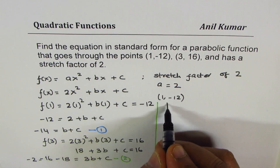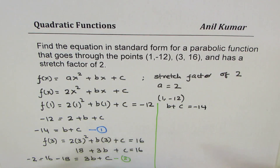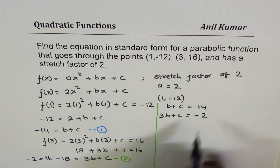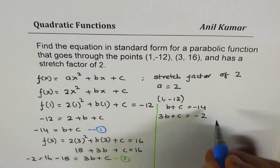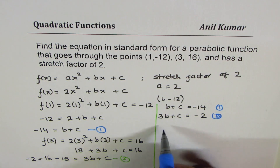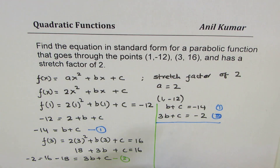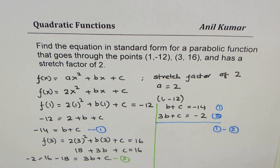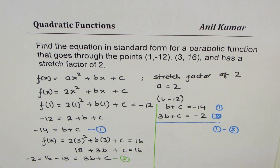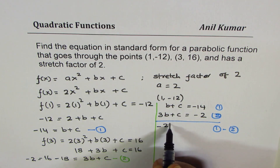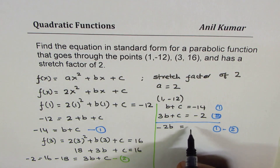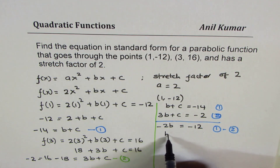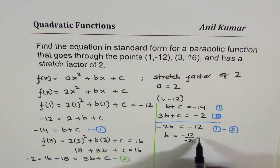Let's rewrite these equations. We have b + c = -14 as Equation 1, and 3b + c = -2 as Equation 2. What happens if I do Equation 1 minus Equation 2? b minus 3b is -2b, c minus c is 0, and on the right side we get -14 minus (-2) = -12. So b = -12 divided by -2, which is 6.